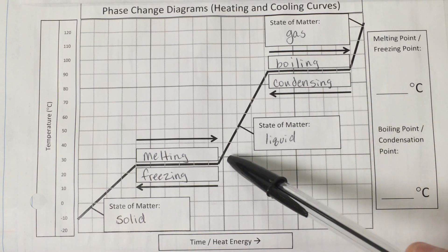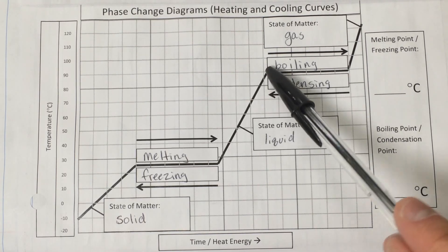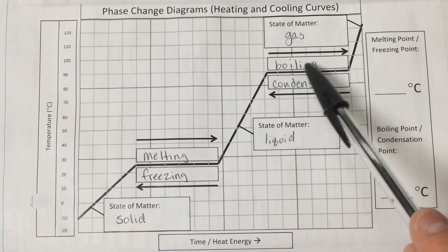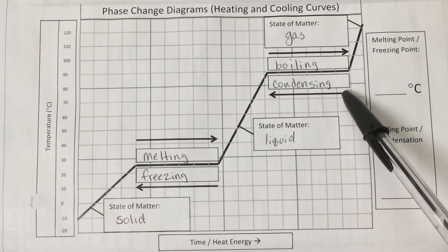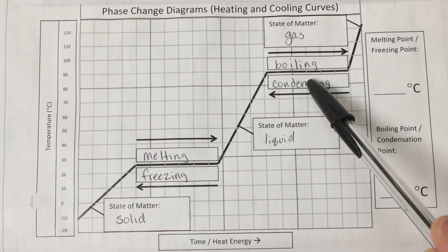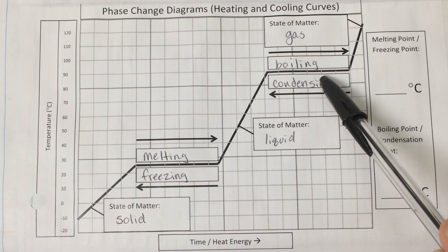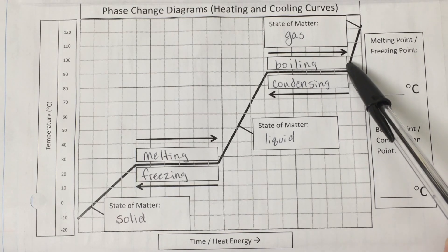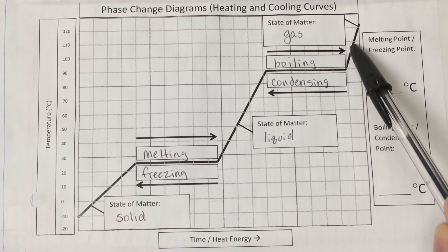And just like the previous phase transition, these processes are happening simultaneously, so while the substance is boiling, some of that newly formed gas will be condensing back down to the liquid. But eventually if we add enough heat into the system that we completely boil the liquid, it will transition to the gas phase and can be heated again.